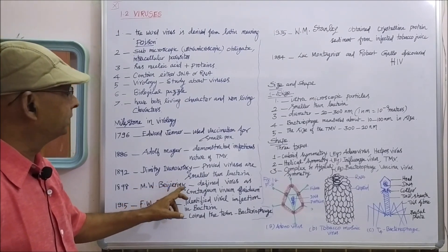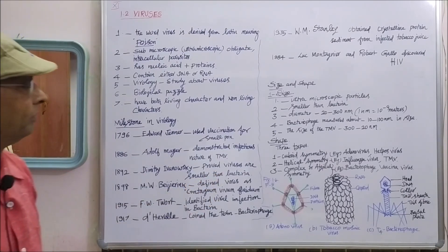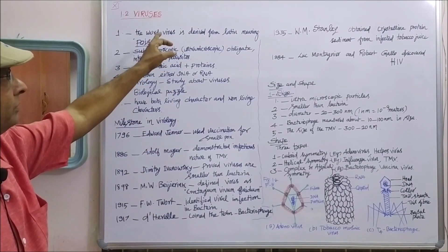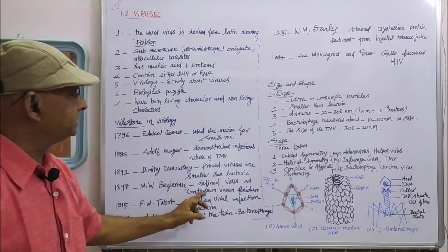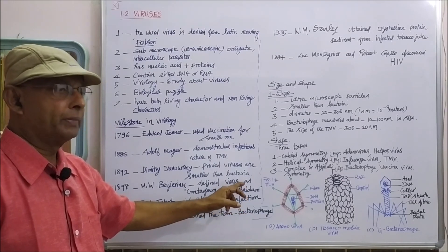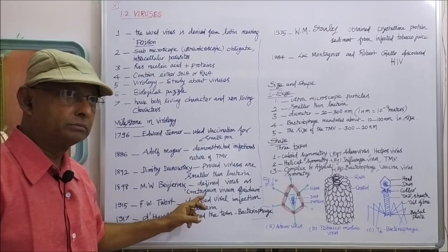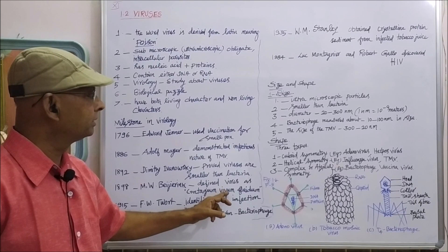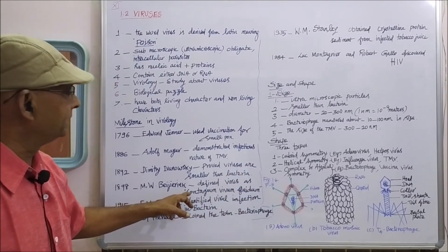In the year 1898, M.W. Beijerinck defined viruses as 'contagium vivum fluidum.' This is a Latin term meaning infectious living fluid — contagium means infectious, vivum means living, and fluidum means fluid. So viruses are infectious, living fluid.